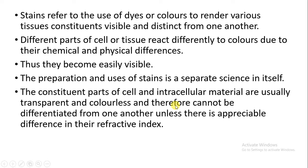Because cells are transparent and colorless, they cannot be differentiated from one another unless there is an appreciable difference in the refractive index. If the components of the cell have a different refractive index, then there will be differentiation. Refractive index means how fast light travels through the material.